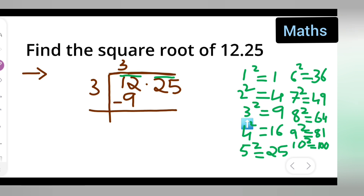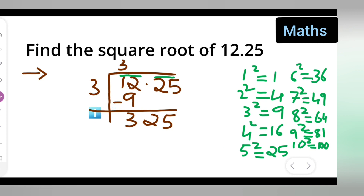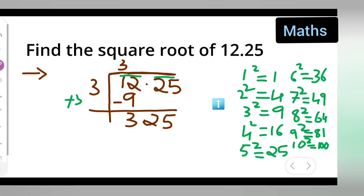So we take 3, since 3 squared is 9. You'll have to subtract: 12 minus 9 gives you 3. Bring down the 25 alongside — so you have 325. Now add 3 plus 3, which gives you 6. Write down 6.